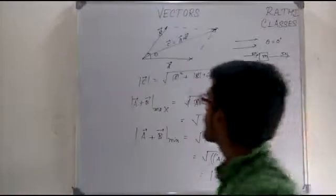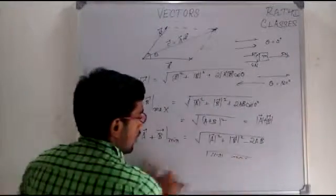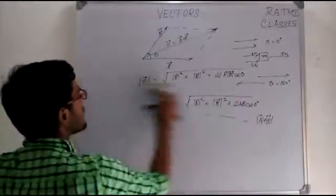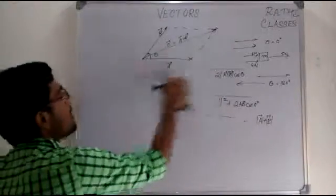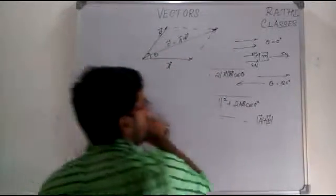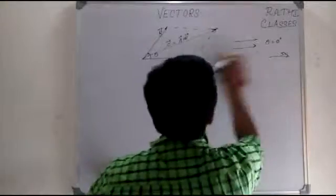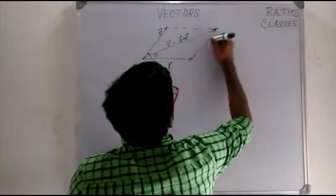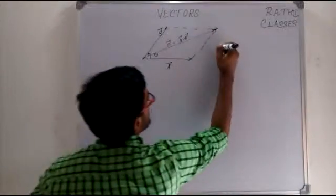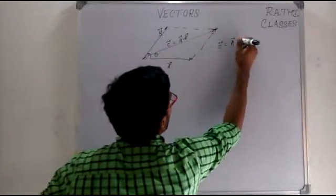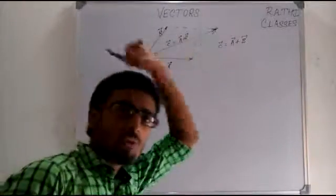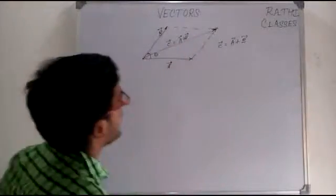Our first job, which was to get the magnitude of the resultant of A plus B, is over. Our next job is to get the direction of the resultant C, which equals vector A plus vector B. We have got the magnitude of C, which is equal to root over of A squared plus B squared plus 2AB cos theta. Now we find the direction of this vector C.